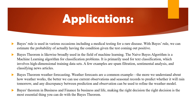Bayes theorem in weather forecasting: weather forecasting is a common example. The more we understand about how weather works, the better we can use current observations and seasonal records to predict whether it will rain tomorrow. Any discrepancy between the prediction and the observation can be used to refine the weather model.